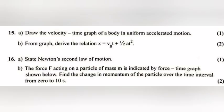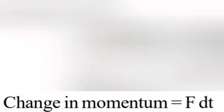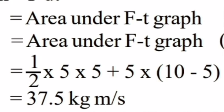Question 16b: The force F acting on a particle of mass M is indicated by force time graph shown below. Find the change in momentum of the particle over the time interval from 0 to 10 second. Answer: Change in momentum FDT equal area under FD graph equal half into 5 into 5 plus 5 into 10 minus 5 equal 37.5 kilogram meter per second.